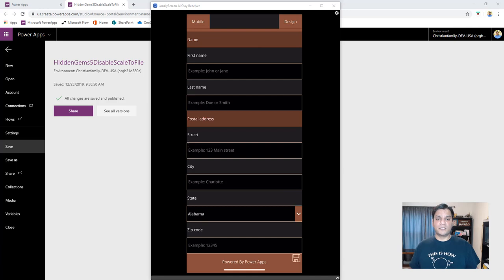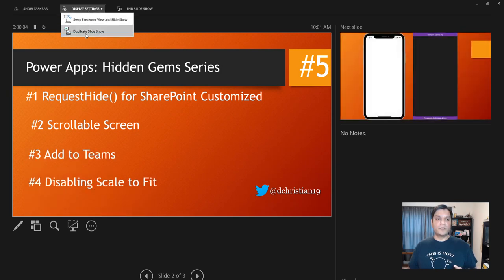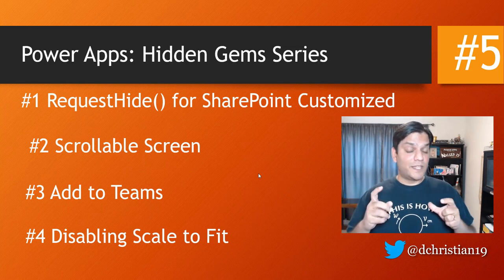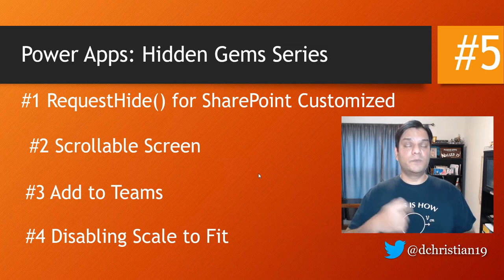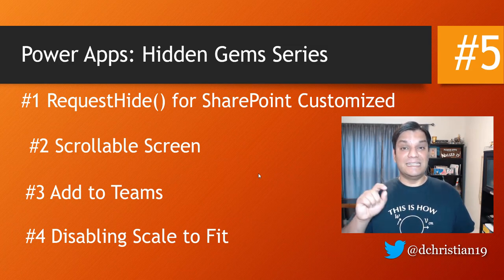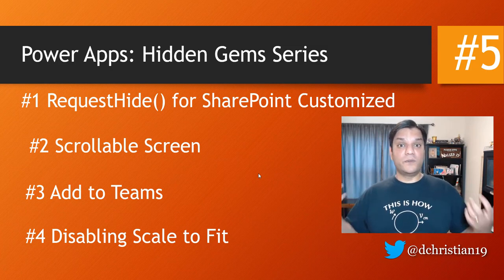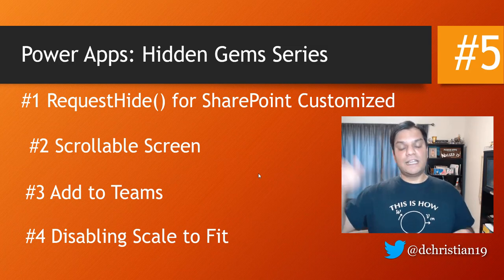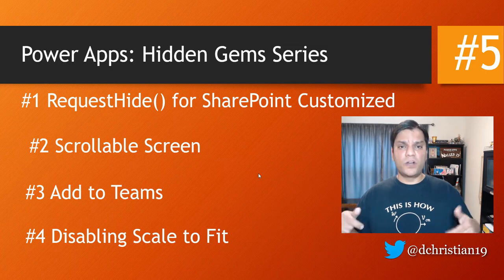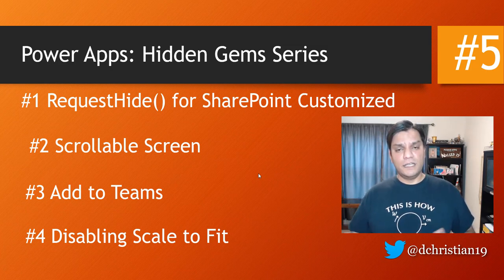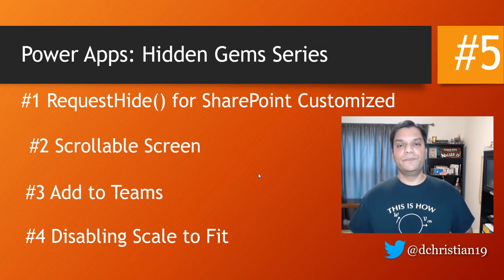Those were the four hidden gems: RequestHide for closing SharePoint customized forms after patching; the scrollable screen component; adding your app to Teams by exporting a zip from Power Apps and uploading it as a custom Teams app; and disabling Scale to Fit while making your app responsive using App.Width and App.Height formulas. This is my last video for 2019 — happy holidays and I look forward to new videos planned for 2020. Thanks!